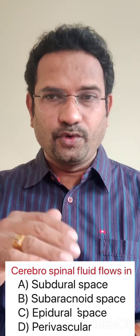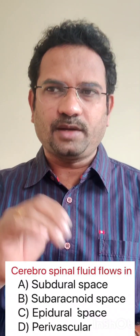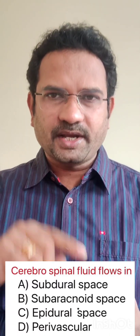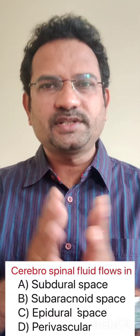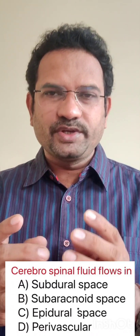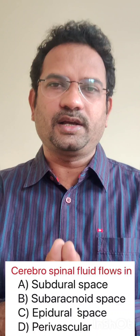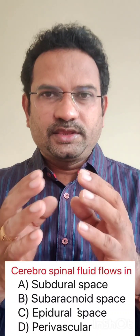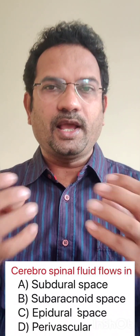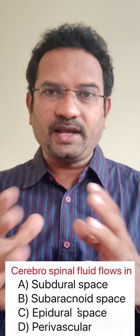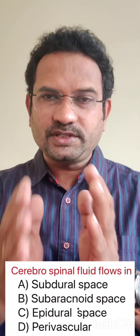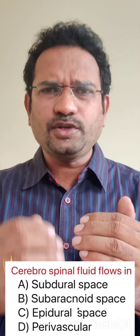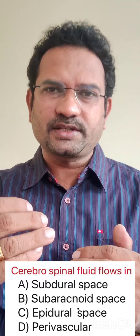Let us move on to the next question. Cerebrospinal fluid flows in: subdural space, subarachnoid space, epidural space, or perivascular space. There is a fluid surrounding our brain and spinal cord. Its job is to protect from mechanical friction, and it also provides nutrients and substance exchange.